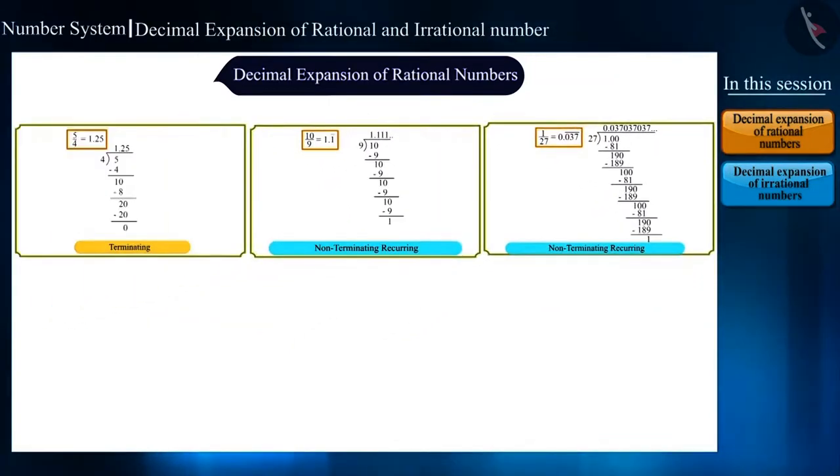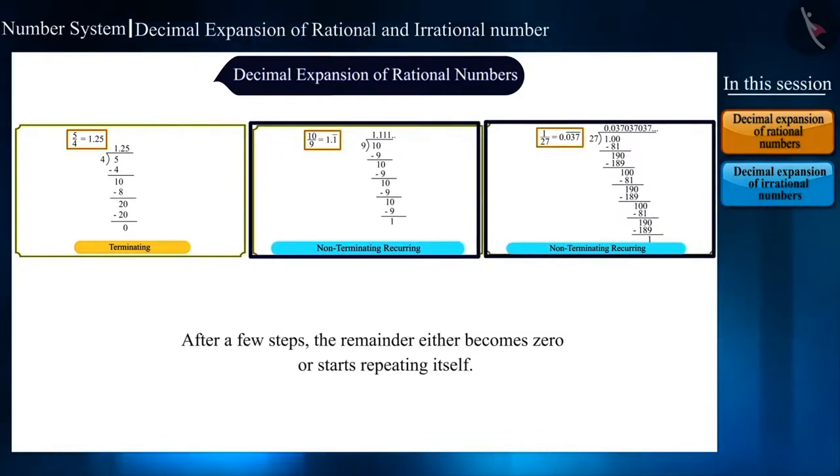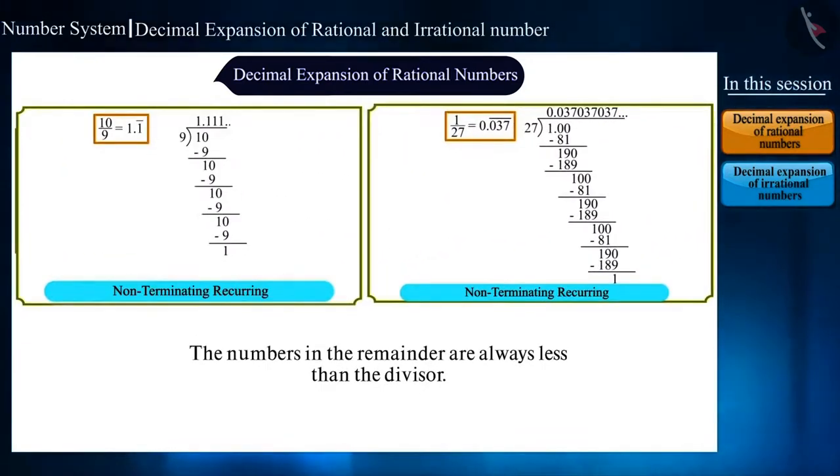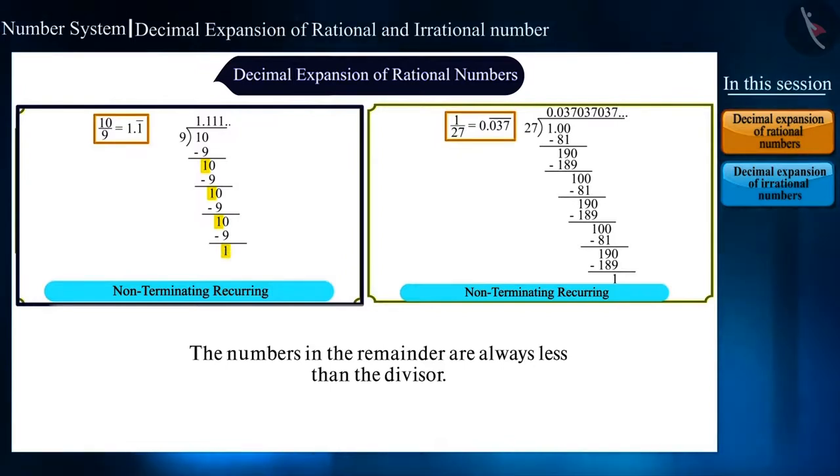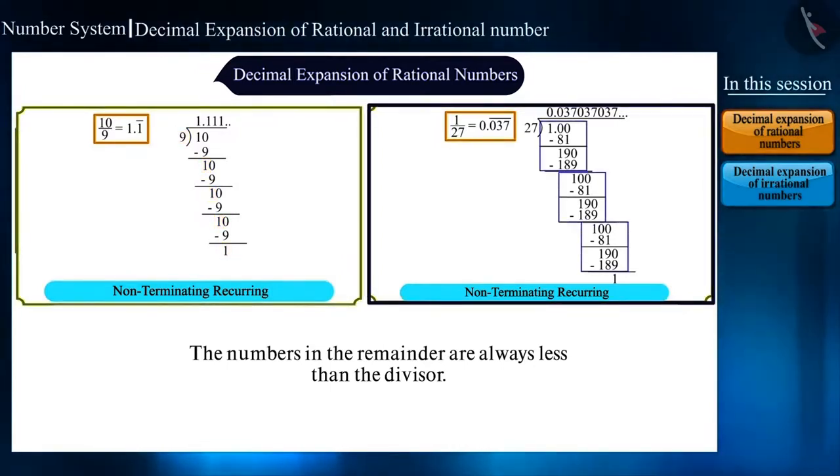If we compare all three examples, we can say that, in the decimal expansion of rational numbers, after a few steps, the remainder either becomes 0 or starts repeating itself. The numbers in the remainder are always less than the divisor. Like in example 2, 1 is getting repeated and the divisor is 9. In case of example 3, there are 3 blocks of repetition and the divisor is 27.